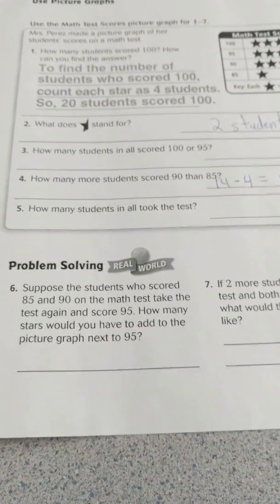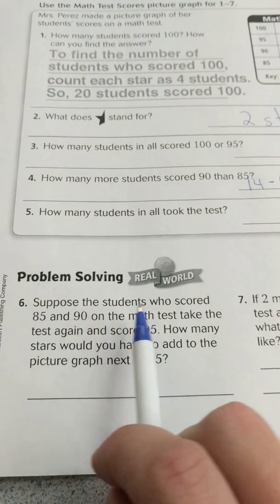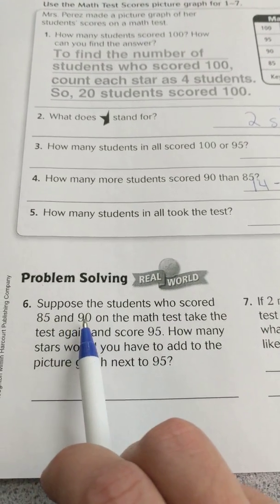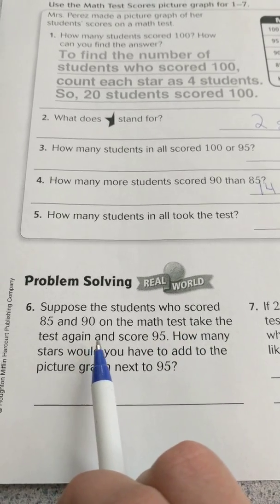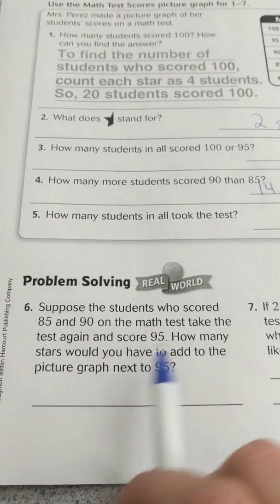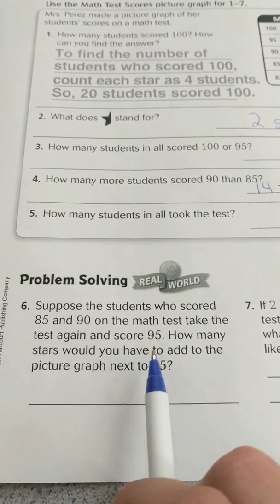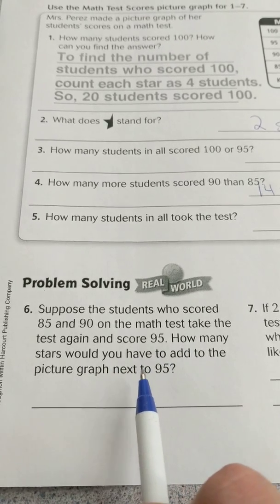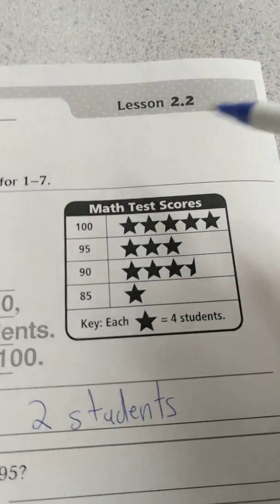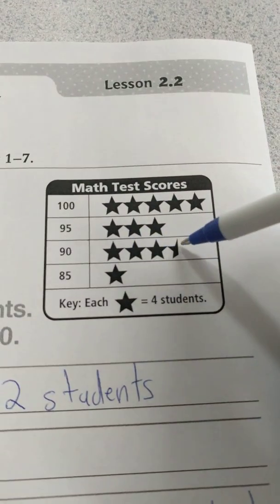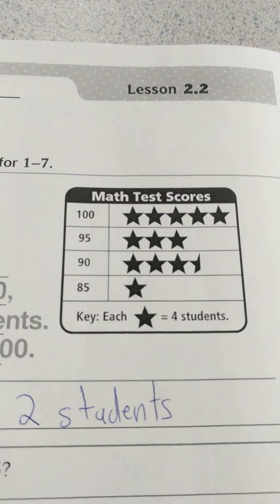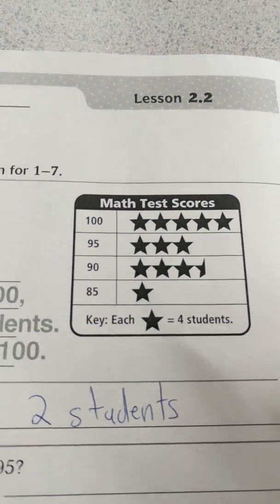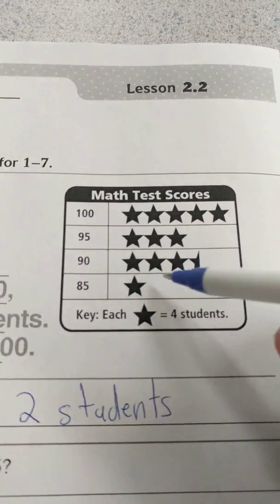And then we go down to number 6 here. Suppose the students who scored 85 and 90 on the math test take the test again and score 95. How many stars would you have to add to the picture graph next to 95? So if we moved all the students that scored 90 and 85 to 95, how many stars would we have to move?